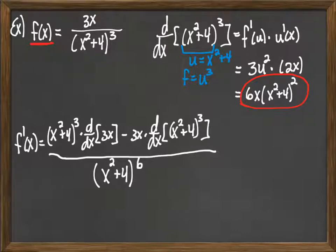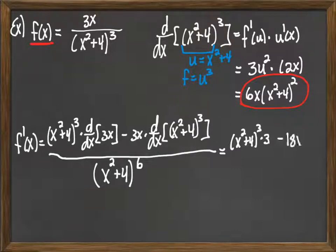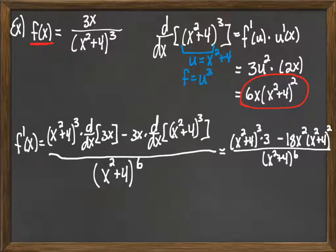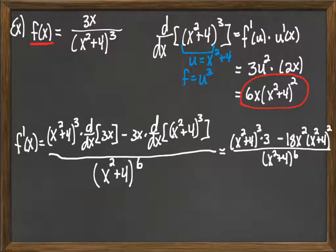We've already done the work to differentiate (x squared plus 4) to the third — that's our circled result in red. Plugging everything in: we have (x squared plus 4) to the third times 3, minus 3x times 6x times (x squared plus 4) squared. That 3x times 6x gives us 18x squared, so the numerator is 3 times (x squared plus 4) to the third minus 18x squared times (x squared plus 4) squared.